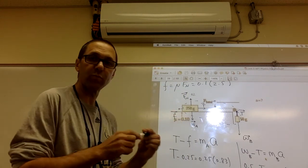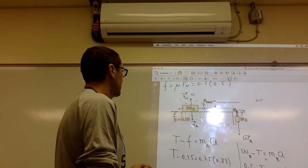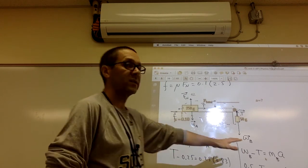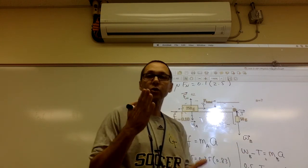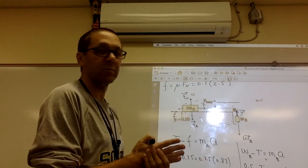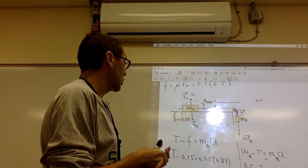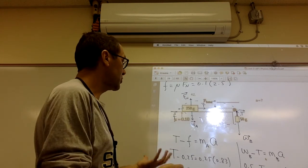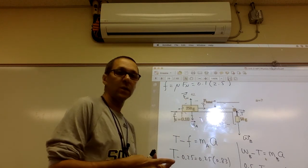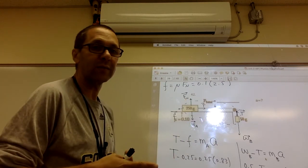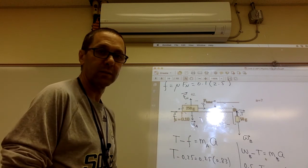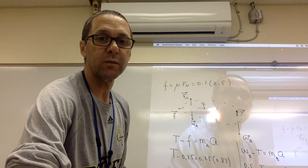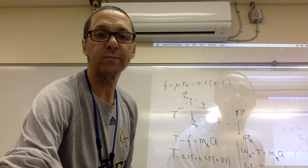If you can do these problems you should have no issues with the others. To recap: when finding the tension, your masses must be in kilograms. When finding the acceleration, since it's all ratios and the tension is internal to the system, you can leave masses in grams and see things canceling out. This is part two of the Atwood machine video.